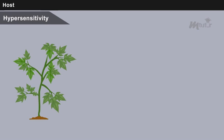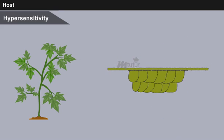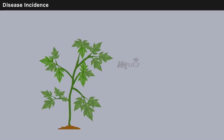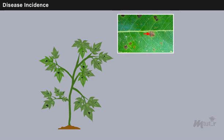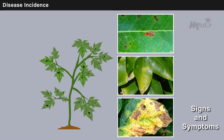Hypersensitivity is the excessive sensitivity of plant tissues to certain pathogens. On entry of the pathogen, the cells around the point of entry die, thereby preventing the spread of further infection. On disease incidence, plants experience changes in their structure. The first indications you notice in plants are referred to as signs and symptoms.